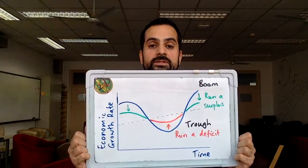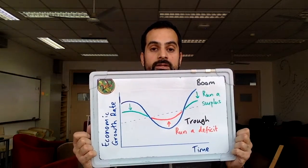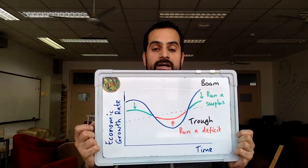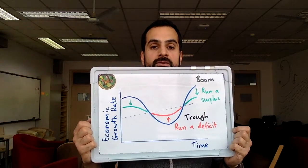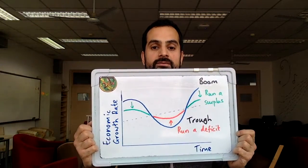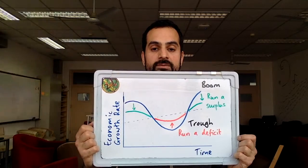When we're using contractionary or expansionary fiscal policy, what we need to be mindful of is where the economy currently is. I'm going to show you a graph of the business cycle, which takes a look at the economic growth rate over time. The dotted line represents the trend of the economy over time, and the blue line represents the actual movements of the economic growth rate.